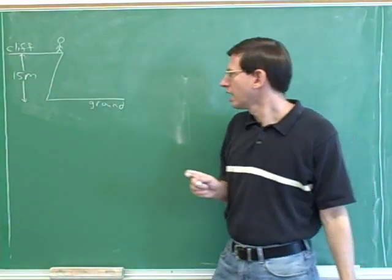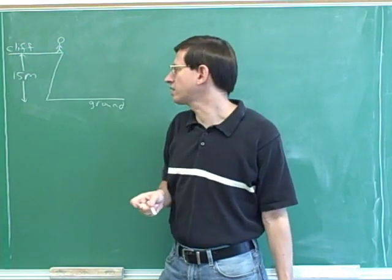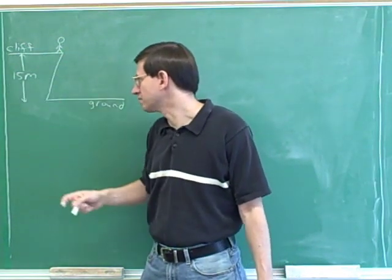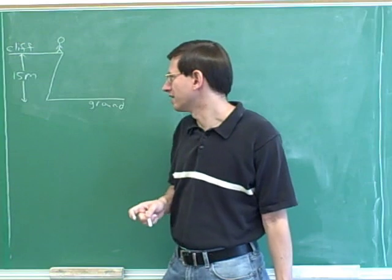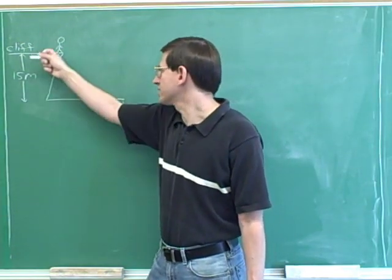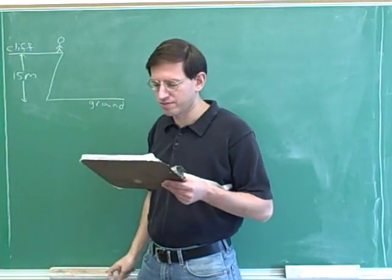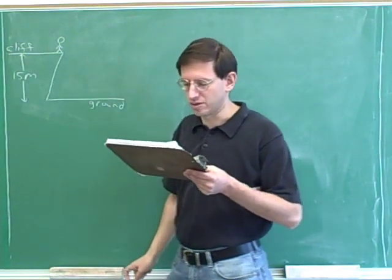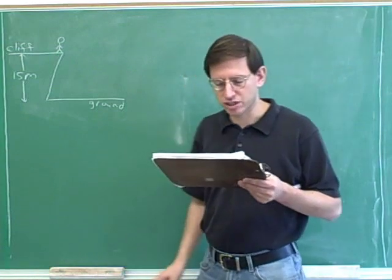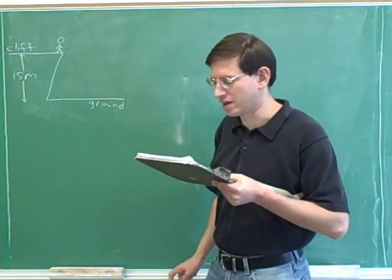The first thing we have to do is to try to draw a picture that will show the path of the object. Here we have a person who's standing at the top of a cliff — it's only 15 meters off the ground. Here's the person on the cliff, here's the cliff, and here's the ground down here. This distance here is 15 meters. The person is going to throw the object straight up, so we want to show the path of the object.